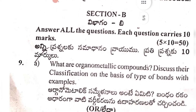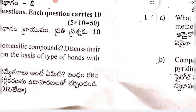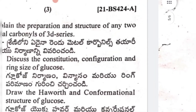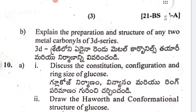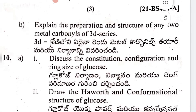Ninth A: what are organometallic compounds? Discuss their classification on the basis of types of bonds with examples. Ninth B: explain the preparation and structure of any two metal carbonyls of the 3D series.